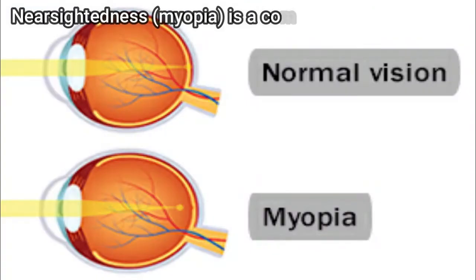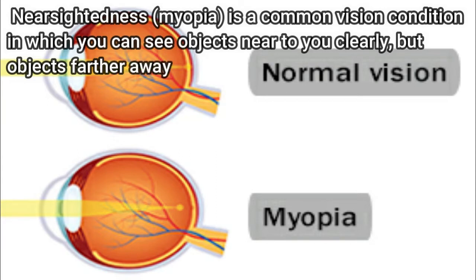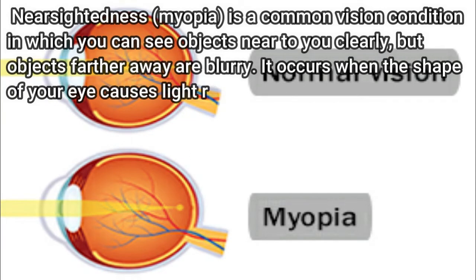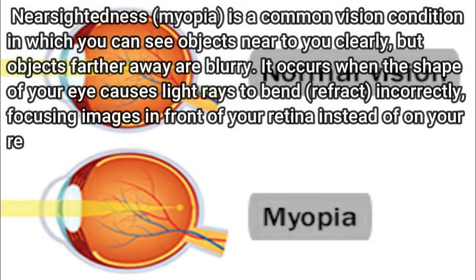Today's topic: Myopia. Nearsightedness, myopia, is a common vision condition in which you can see objects near to you clearly, but objects farther away are blurry. It occurs when the shape of your eye causes light rays to bend (refract) incorrectly, focusing images in front of your retina instead of on your retina.